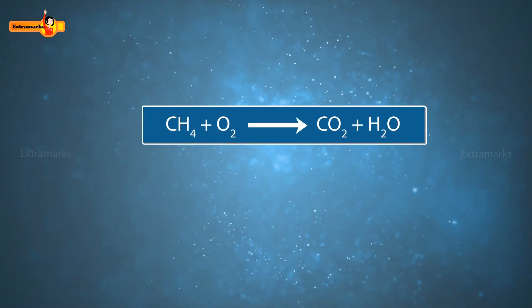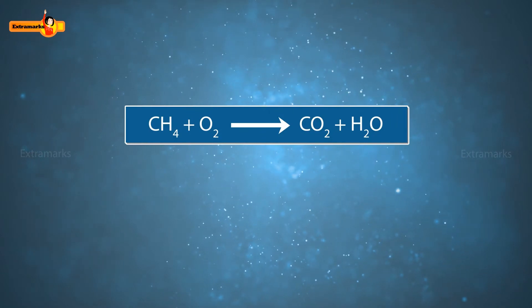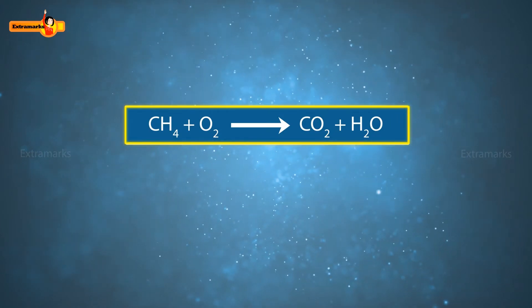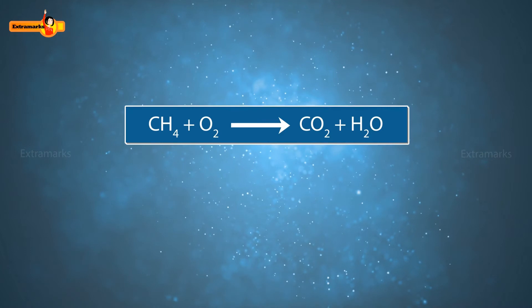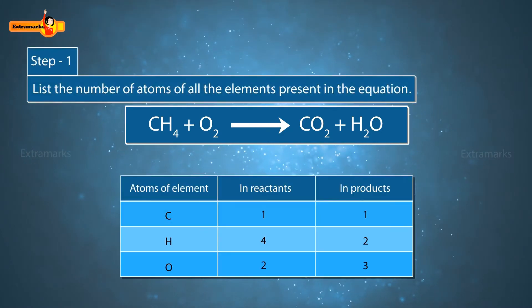Coming back to our question, for balancing a chemical equation, let us first write the formula of reactants and products. Next, we need to list the number of atoms of all the elements present in the equation.